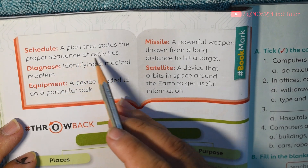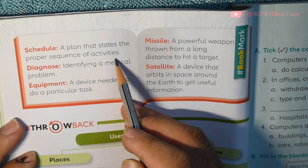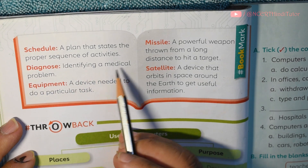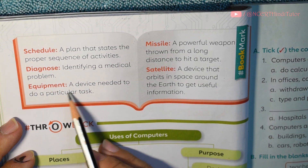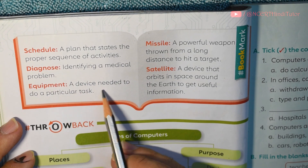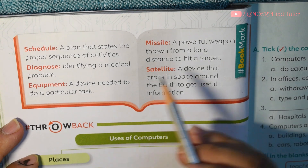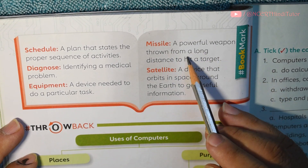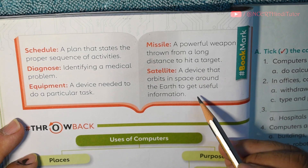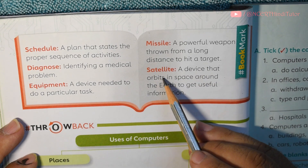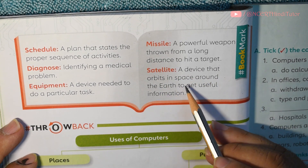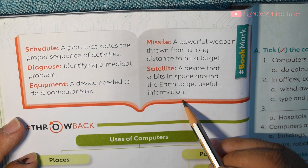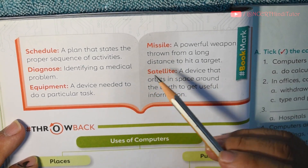Word meanings: Schedule — a plan that states the proper sequence of activities. Diagnose — identifying a medical problem. Equipment — a device needed to do a particular work. Missile — a powerful weapon thrown from a long distance to hit a target. Satellite — a device that orbits in space around the earth to get useful information.